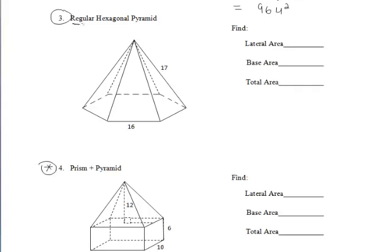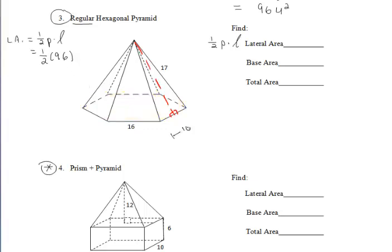For number three, we're working with a regular hexagonal pyramid, so since this pyramid is regular, to find the lateral area we can do one-half of the perimeter of the base times the slant height. The perimeter of our base is 96. For the slant height, we draw it in — 17 is a lateral edge, and one side of the base is 16, so when we draw in the altitude it breaks it up into 8 and 8. We have an 8-15-17 family, so our slant height is 15, giving us a lateral area of 720 units squared.